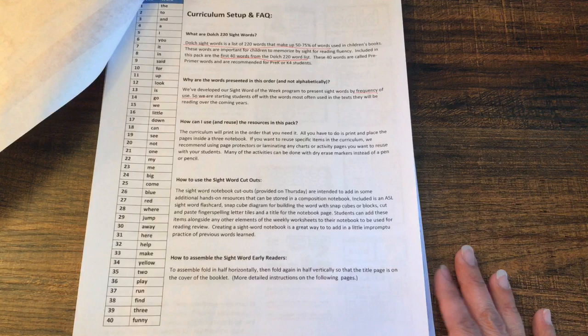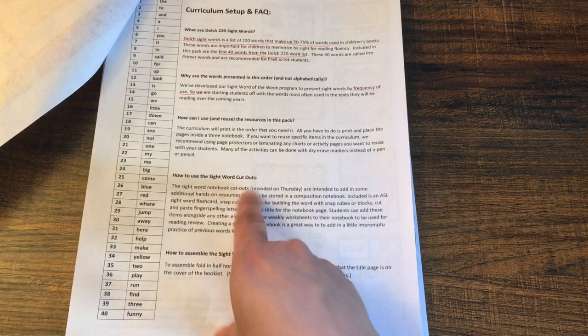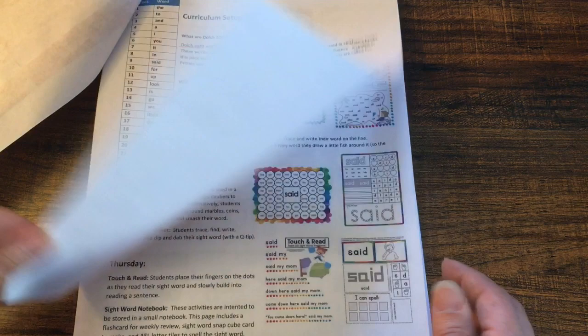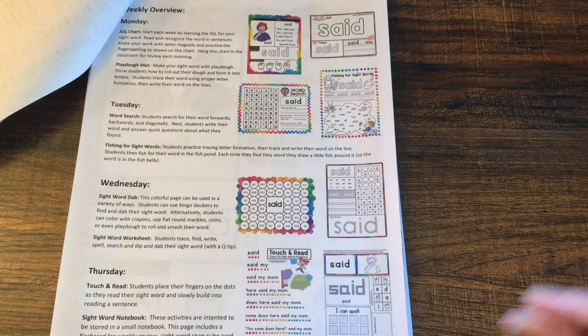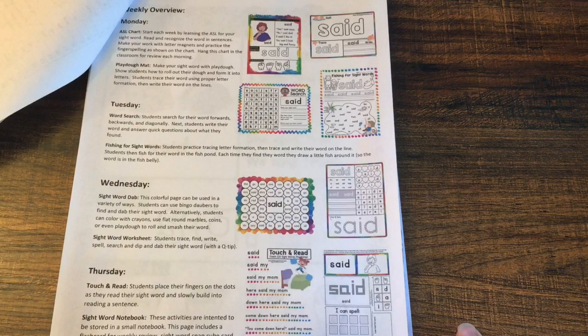How can I use and reuse the resources in this pack? How to use the sight word cutout and how to assemble the sight word early readers. On the second page, you get the weekly overview. All the lessons for all the words are set up exactly the same with the same activities for your children. This is absolutely wonderful because your child gets used to what you're doing and they are familiar every week with what they have to do.